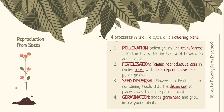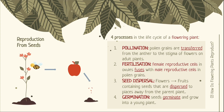There are four processes in the life cycle of a flowering plant. Firstly, the adult plant has flowers that are pollinated by insects or wind through pollination. Pollination occurs when pollen grains are transferred from the anther to the stigma. Next, through fertilization, the female reproductive cells in ovules are fertilized by the male reproductive cells carried in pollen grains. Then the flowers develop into fruits that contain seeds, which are dispersed to places away from the parent plant. Finally, the dispersed seeds undergo germination with the right conditions and grow into a young plant, and the cycle repeats.